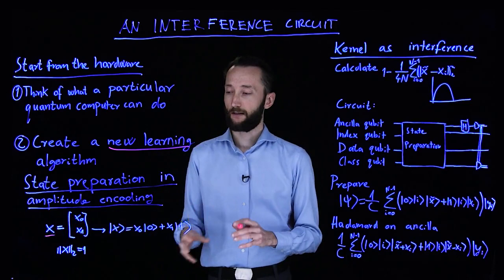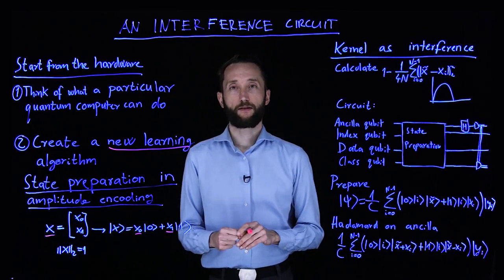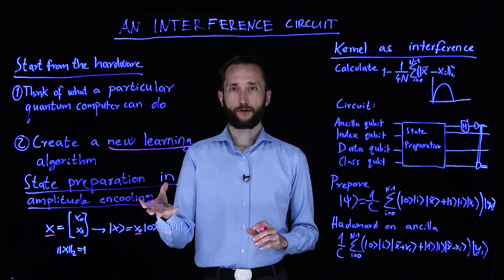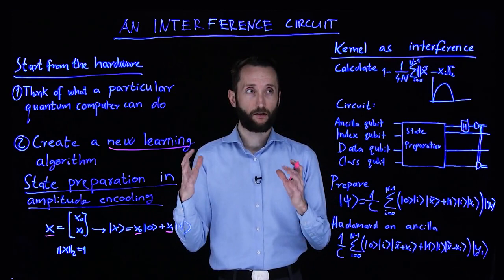So if we are given some vector in our data set which we normalize to one, then we can encode it in the probability amplitudes in a superposition. And so we have to be careful of how we actually prepare it, but for some data sets this can be approximated well with shallow circuits.